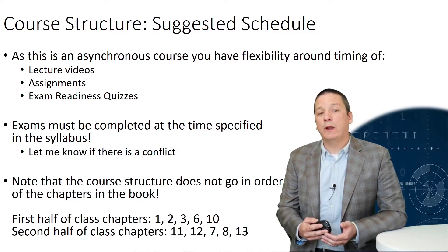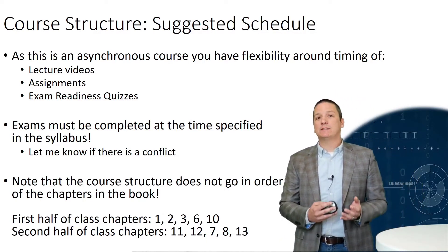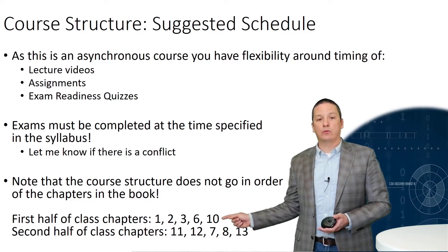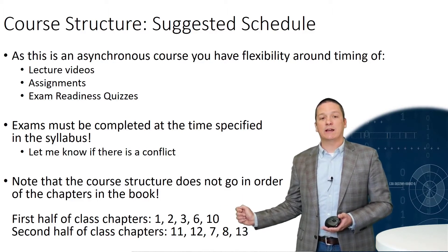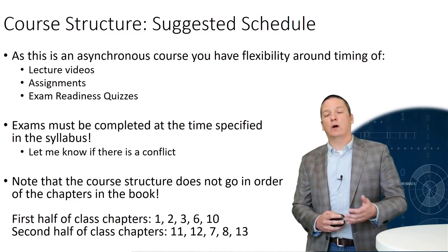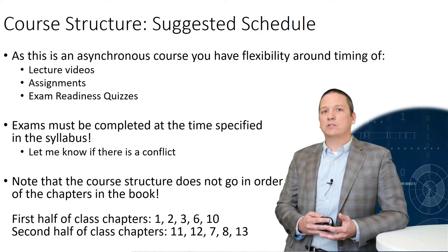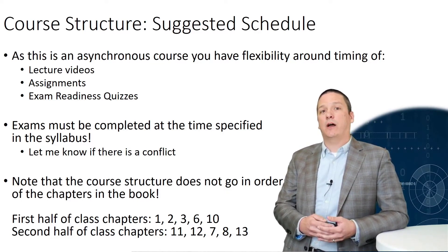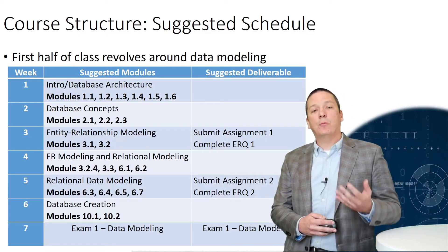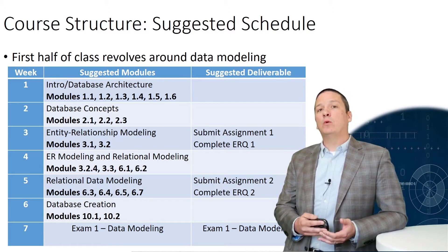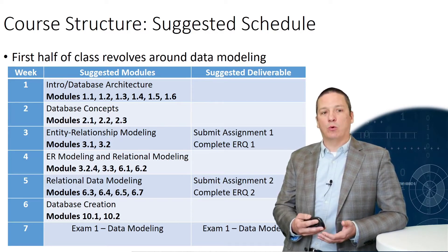One thing I will point out is that the course structure does not necessarily follow the order of the chapters in the book. For the first half of class, we're going to be covering chapters 1, 2, 3, 6, and 10. And then in the second half of the course, chapters 11, 12, 7, 8, and 13. As this is an asynchronous course, that puts a lot of responsibility on you for making sure you stay on top of the materials. So to help you along, I have provided a suggested schedule so that no one week is completely overloaded with readings or videos.